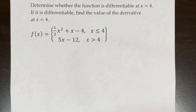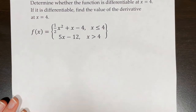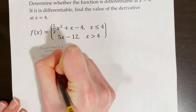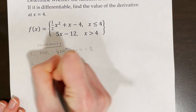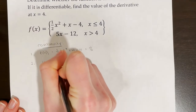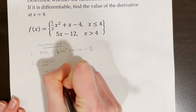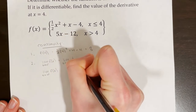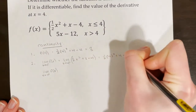Determine whether the function is differentiable at x equals 4. If it is differentiable, find the value of the derivative at x equals 4. The first step when determining differentiability is to determine whether the function is continuous at x equals 4. The first step in our definition of continuity is to find f of 4 and make sure that number exists, so I'm going to plug 4 into the top function. Next, I need to find the limit as x approaches 4 from the left side of f of x. For the left side, I use the top function: the limit as x approaches 4 from the left of one half x squared plus x minus 4. Using direct substitution and plugging in 4, I get 8.